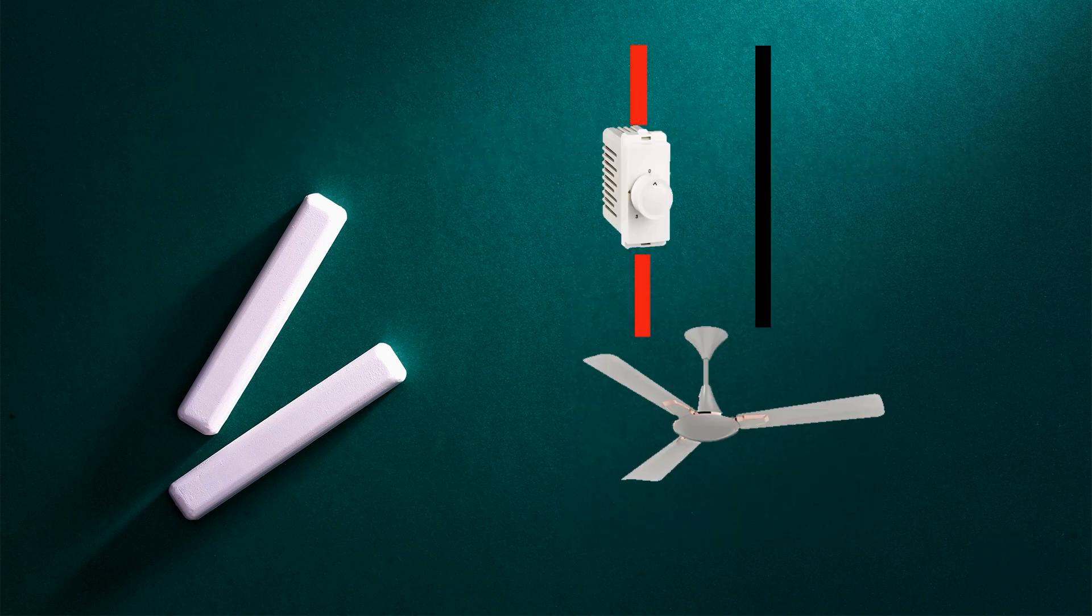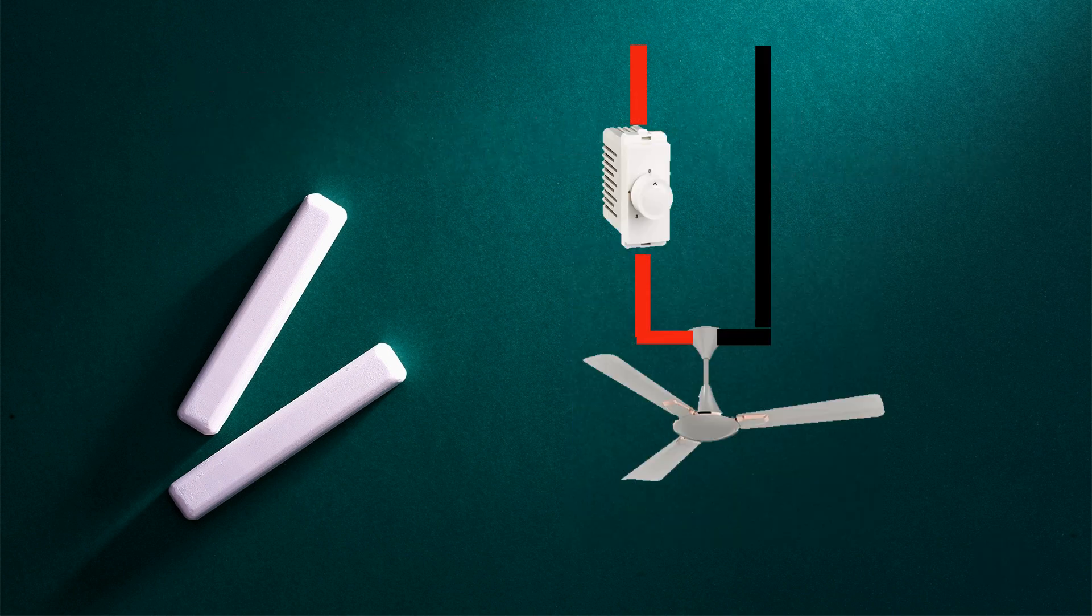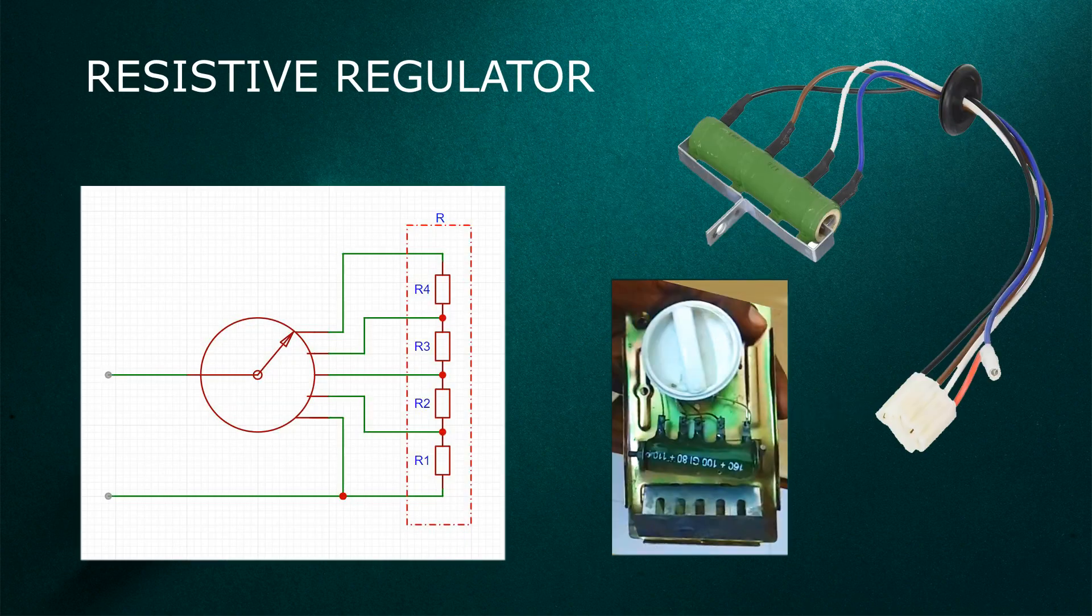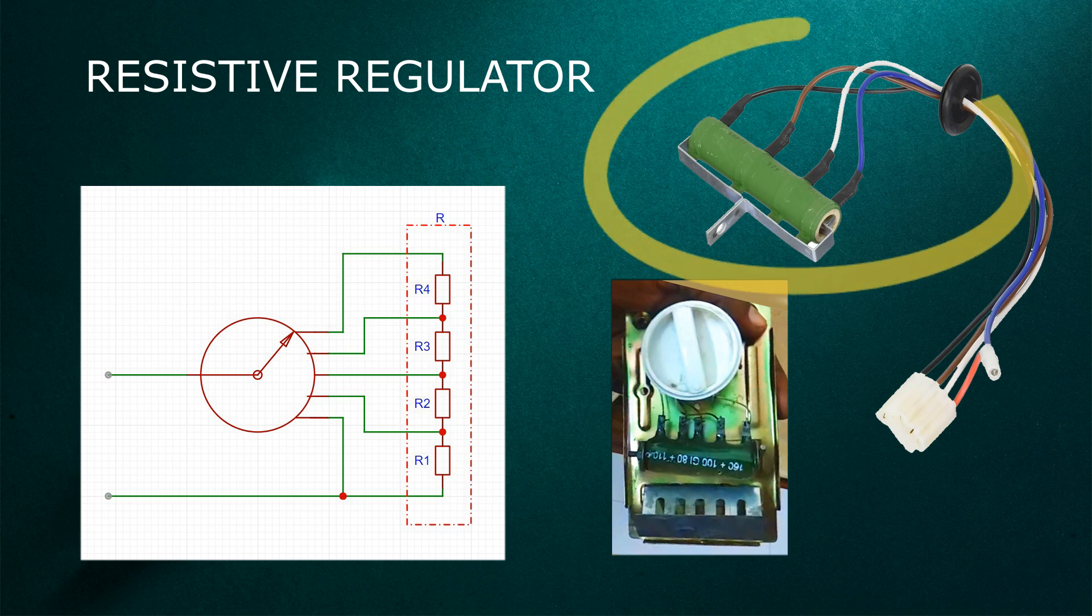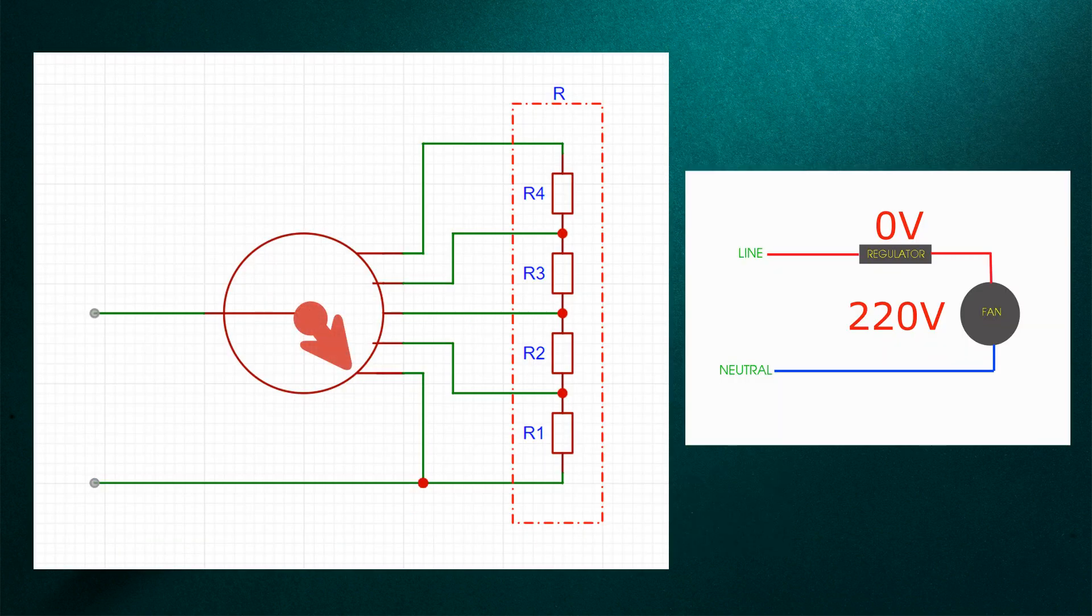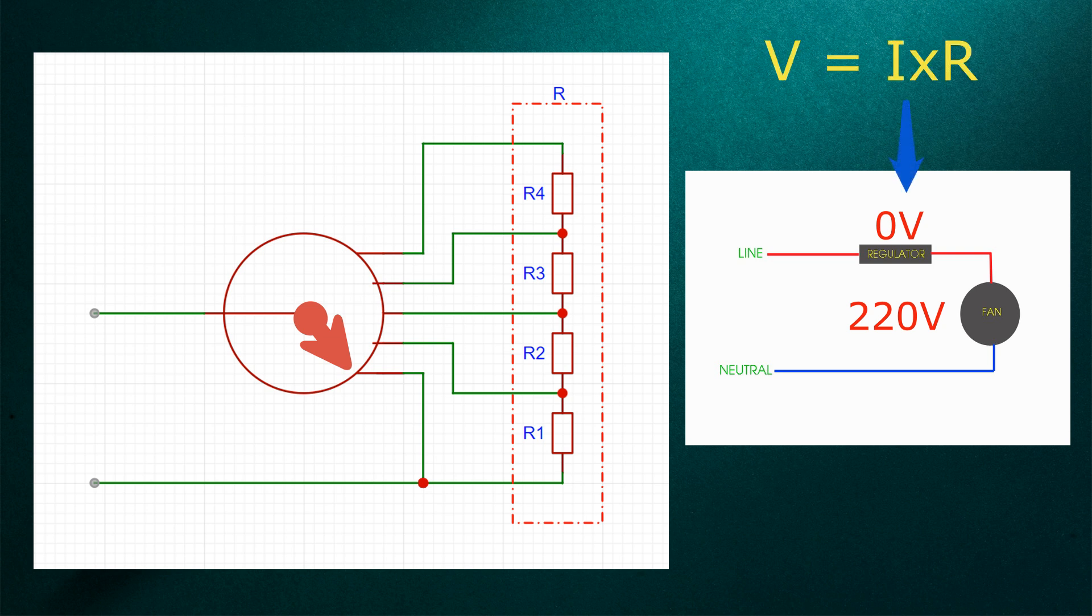The speed regulators are usually connected in series to the load. Let's talk about the resistive regulator first. The resistive regulator employs a multi-tap wire wound resistor. When the resistor switch is set to position 1, the fan gets connected directly to the main power source and runs at its full speed.